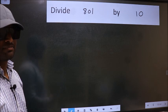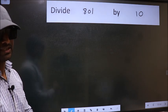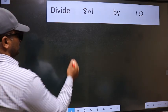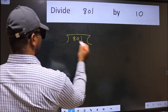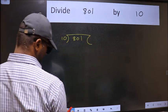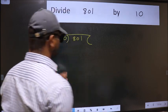But before that, we should frame it in this way: 801 divided by 10. Here, this is your step 1.